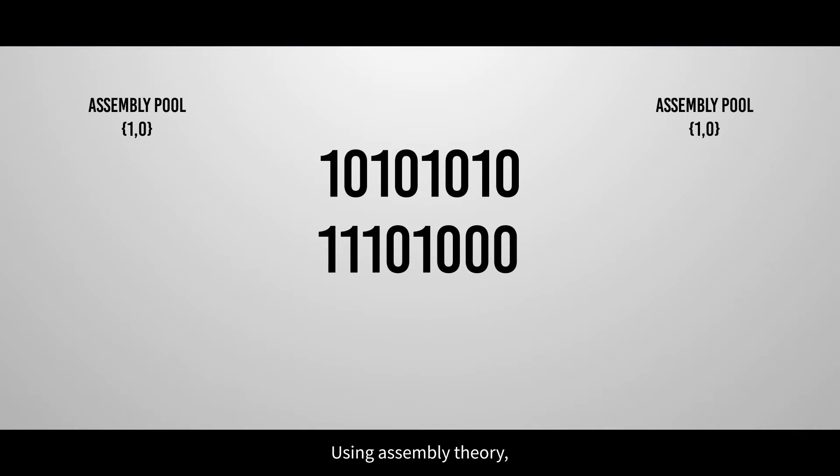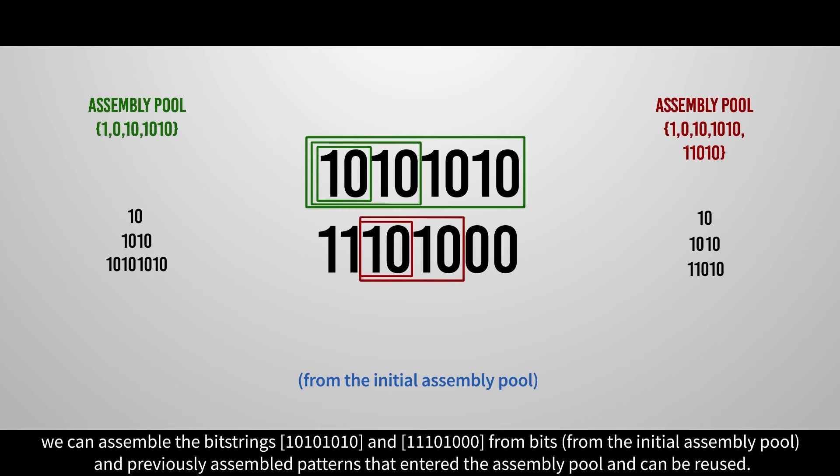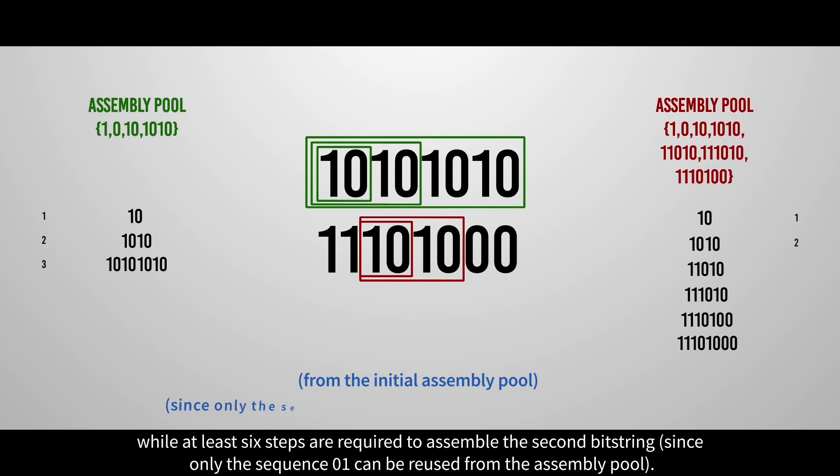Using assembly theory, we can assemble the bitstrings from bits and previously assembled patterns that entered the assembly pool and can be reused. The first bitstring can be assembled in three steps, while at least six steps are required to assemble the second bitstring.